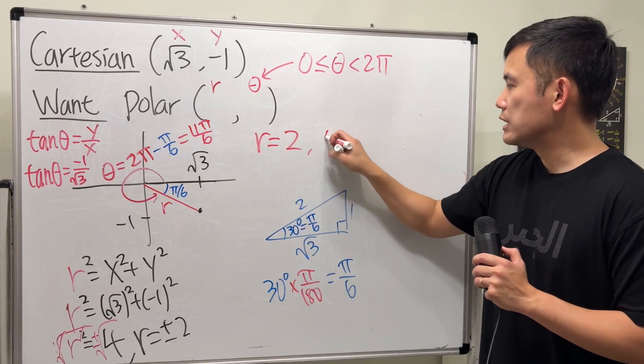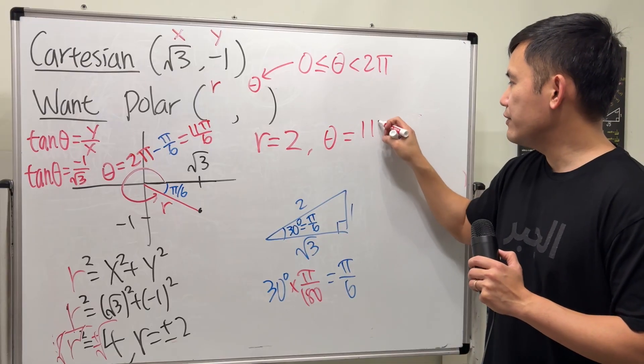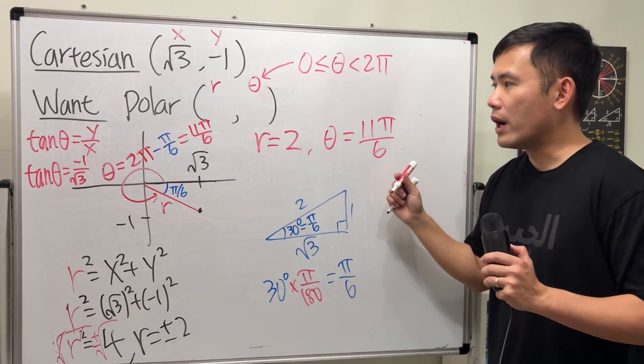So when r is 2, the corresponding angle is 11π/6. So that's one combination.